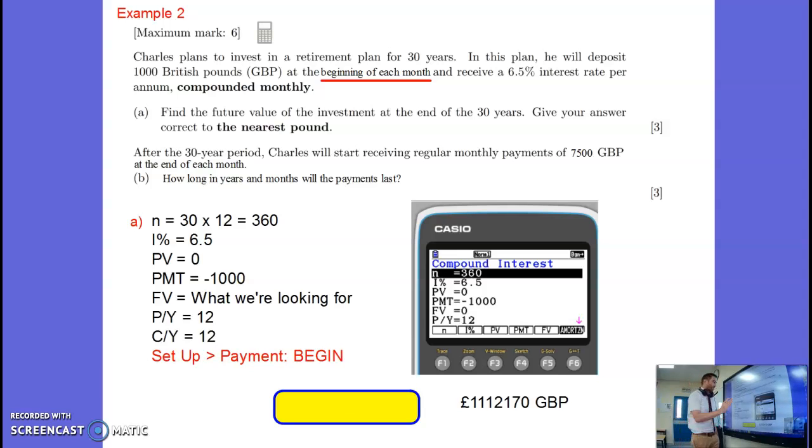Charles has got loads of money in the bank. Well done, Charles. So that's part A. That is the future value of the investment to the nearest pound.